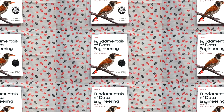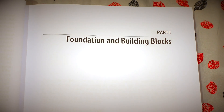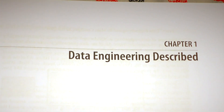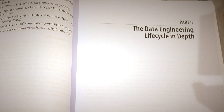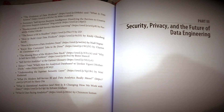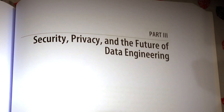This book is divided into three parts. Part one focuses on the foundation and the building blocks of data engineering. Part two focuses on the data engineering life cycle in depth. Part three is all about security, privacy and the future of data engineering.